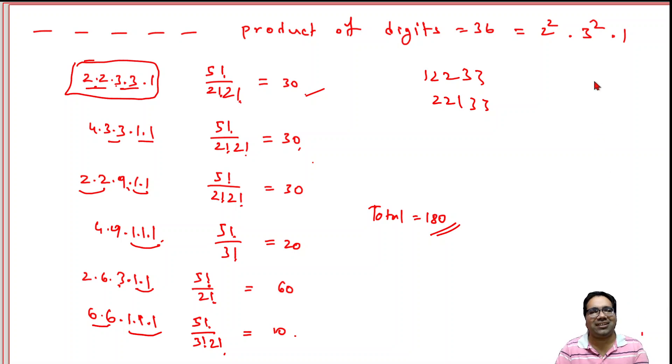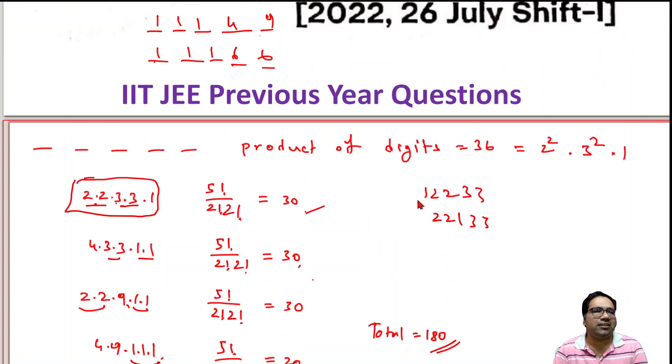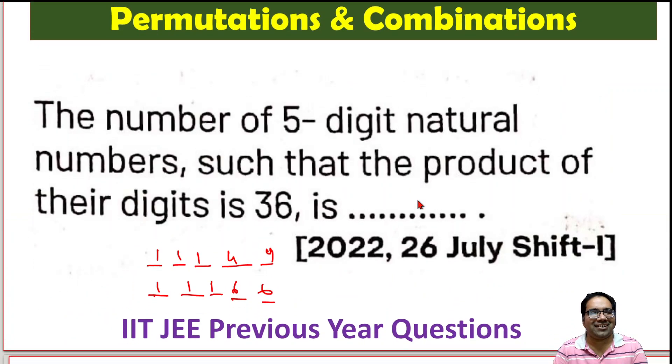Basically, 180 numbers we can create using the factors of 36. That is using 2s, 3s, 4s, 9 and 6. Single digit factors of 36 and ones, obviously. 1, 2, 3, 4, 6, 9 using these numbers, we can create 180 five-digit numbers. That is the correct answer.